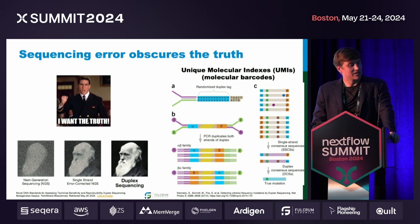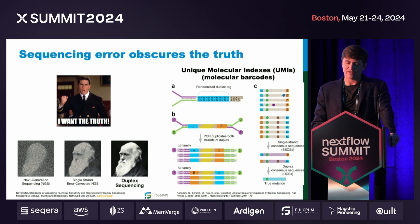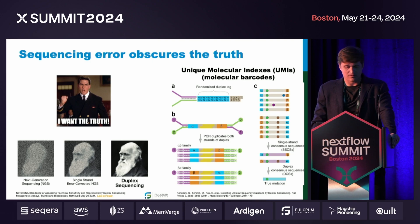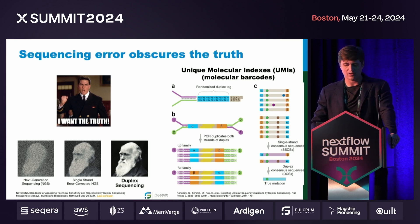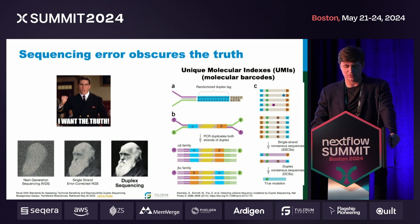These molecular barcodes are also called unique molecular indexes, or UMIs. They're attached to each DNA molecule to identify them prior to amplification, and then after amplification those copies can be used to vote on a consensus, or form a quorum, if you will.